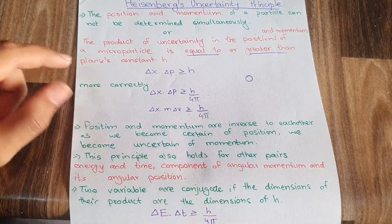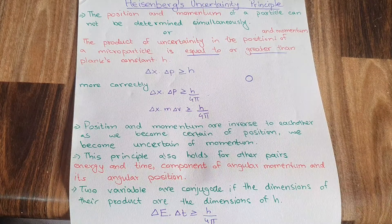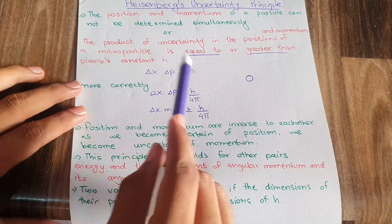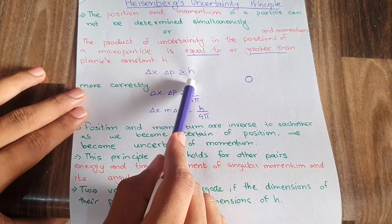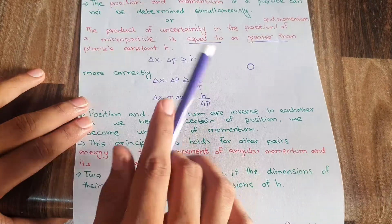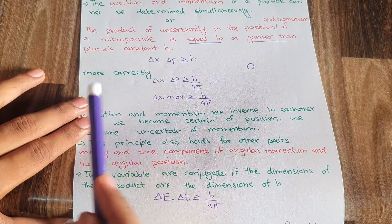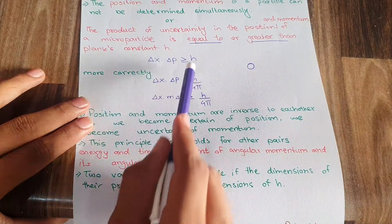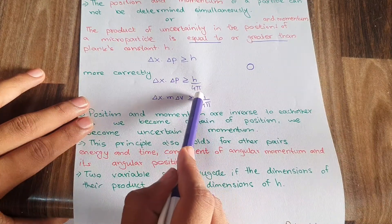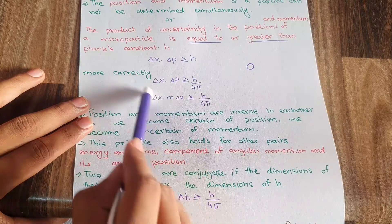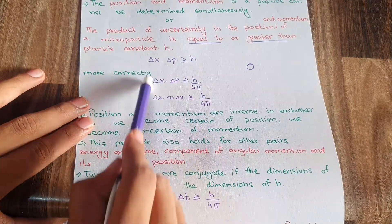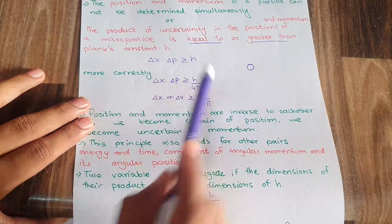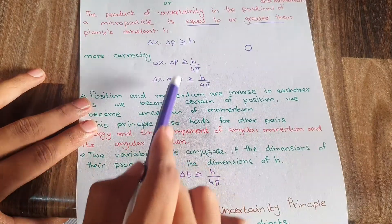If I take the product of the uncertainty in position and uncertainty in momentum, then the answer is greater than or equal to h, where h is Planck's constant. If I want to write this equation more correctly, then I will have to add 4 pi in the denominator with h. This equation is considered more correct.